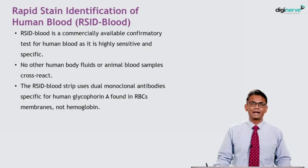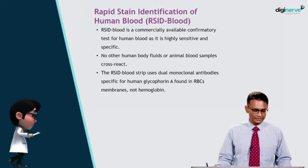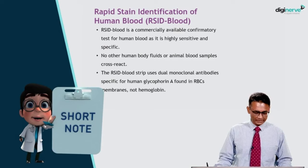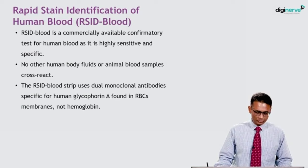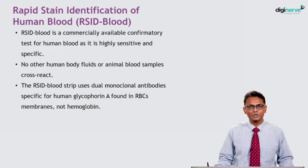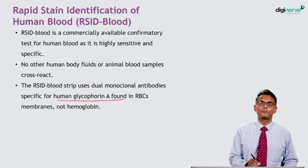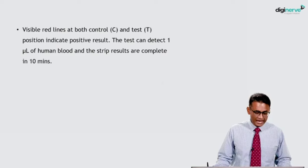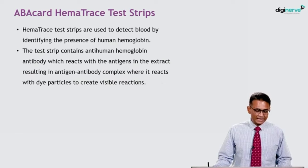There are other more rapid methods to test human blood. The rapid strain identification of human blood — RSID blood — is a commercially available confirmatory test for human blood that is highly sensitive and specific. No other human body fluids or animal blood samples cross-react. The RSID blood strip uses dual monoclonal antibodies specific for human glycophorin A, found in RBC membranes, not hemoglobin. Visible red lines at both control and test positions indicate a positive result. The test can detect one microliter of human blood, and strip results are complete in 10 minutes.